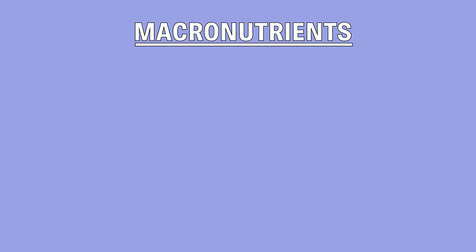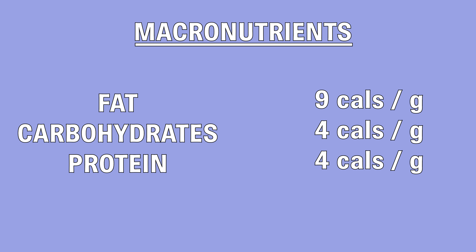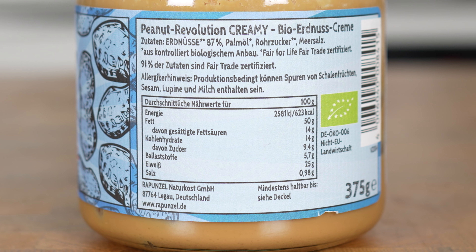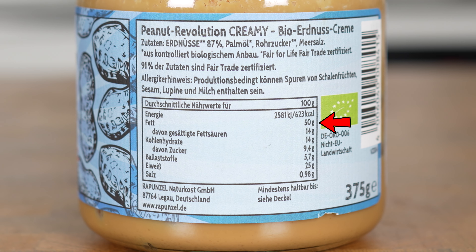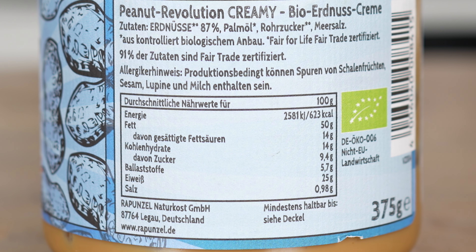In the context of food, calories are measured through the energy provided by macronutrients. The three main macronutrients are fat, carbohydrates, and protein. Protein and carbohydrates provide around 4 calories per gram, while fat provides 9 calories per gram. For example, 100 grams of peanut butter has 50 grams of fat, 25 grams of protein, and 15 grams of carbohydrates — adding up to 610 calories per 100 grams. This is how every food and drink gets measured.